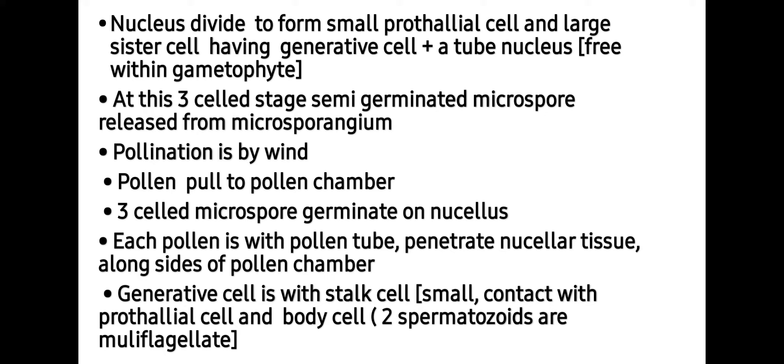The nucleus divides to form a small prothallial cell and a large sister cell with a generative cell and the tube nucleus. So at this three-cell stage, the semi-germinated microspore is shed from the microsporangium. This is an important question for your examination — at which cell stage is the microspore shed from the microsporangium? The answer is the three-cell stage.